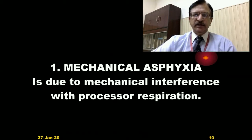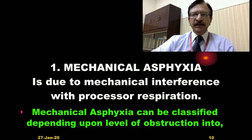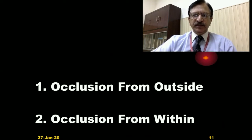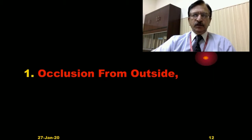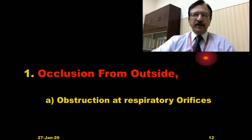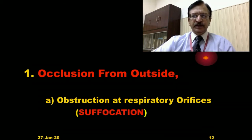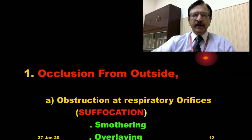Mechanical asphyxia can be divided depending upon the level of obstruction. This obstruction or occlusion can be from outside, or it can be from inside within. Occlusion from outside may be either obstruction at the respiratory orifices — the mouth and nose are obstructed — which is called suffocation. There are other processes like smothering or overlaying, which are two mechanisms causing suffocation by obstruction or occlusion of the respiratory orifices.